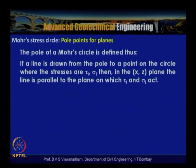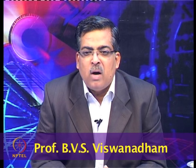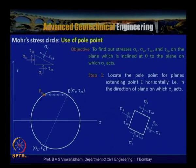The pole of the Mohr circle is defined such that if a line is drawn from the pole to a point on the circle where the stresses are tau i and sigma i, then that line is parallel to the plane on which tau i and sigma i act. The use of the pole point is to find stresses sigma c, sigma a, tau ac, and tau ca on a plane inclined at angle theta to the plane on which sigma z acts.